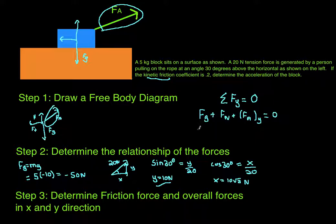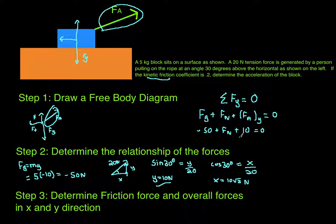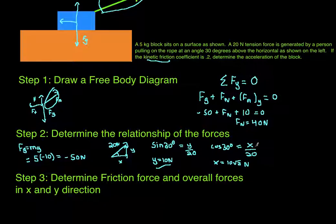The force of gravity is negative 50. The normal force we don't know — that's why we're doing this. The applied force in the Y direction is positive 10 Newtons. Bringing these together: negative 50 plus 10 is negative 40, so F_N minus 40 equals 0, and our normal force equals 40 Newtons. We need that normal force to find friction, which leads us into step three.